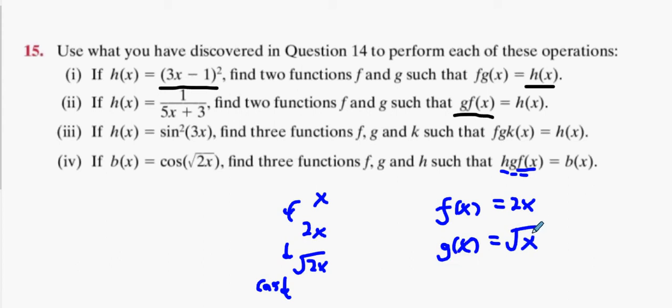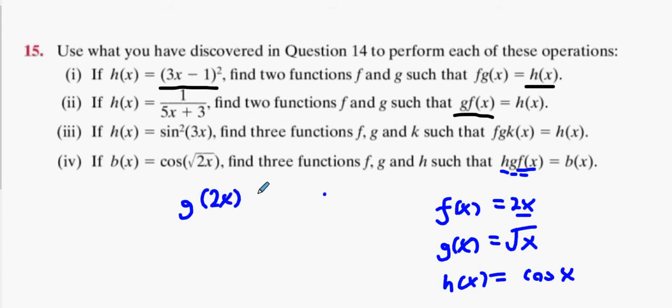And the third one, which is h(x)—what do you reckon? Cos(x). And I think that will all link up nicely. If you go through it start to finish, you're basically going to get f(x) is 2x, then you're going to get g(2x), which would be √(2x), and then you're going to get h(√(2x)), which is cos(√(2x)). We good?